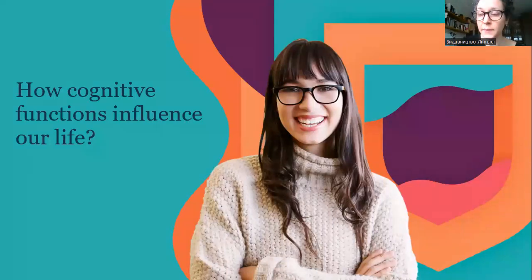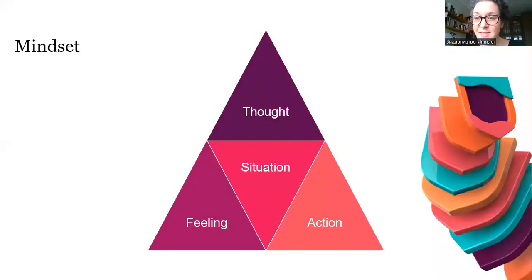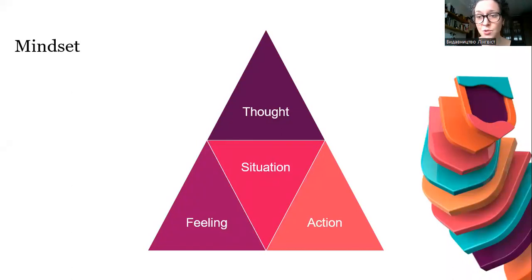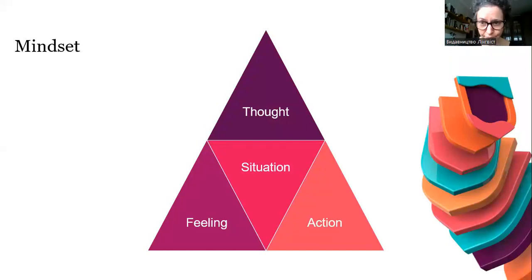Now, how cognitive control functions influence our life. I'll show you this triangle — how any belief is built. We have a situation, and we act, feel, and think about it. According to research in psychology, the thought comes first. This thought can be planted in childhood by a significant adult and follow the person throughout their whole life. The thought will define the feeling, and the feeling will define the actions.